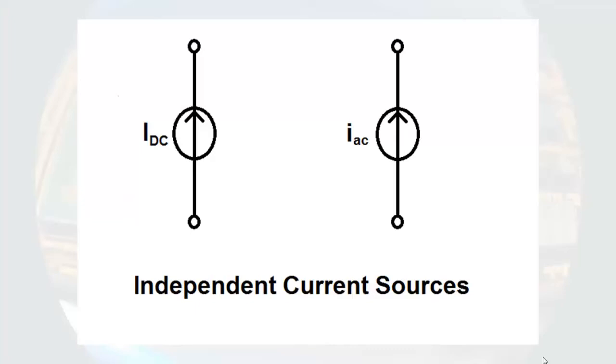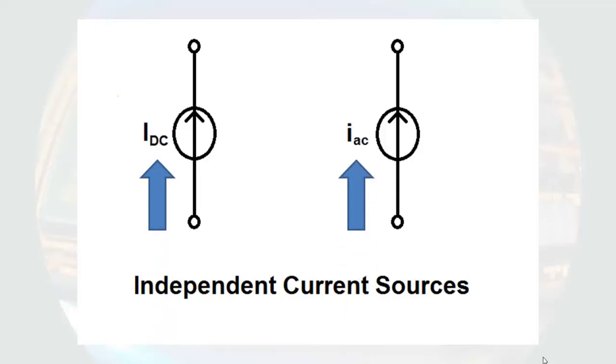There is also such a thing as an independent current source — a source that outputs a constant current regardless of the circuit surrounding it. In this course, we will use one symbol for both AC and DC current sources. Differentiating between AC and DC signals will be done by the designation next to the source. The convention we will use is a capital I with a capital subscript to designate DC, while a lowercase i followed by a lowercase subscript will designate an AC current. This convention of upper and lowercase letters for variables and subscripts will be used throughout the course.